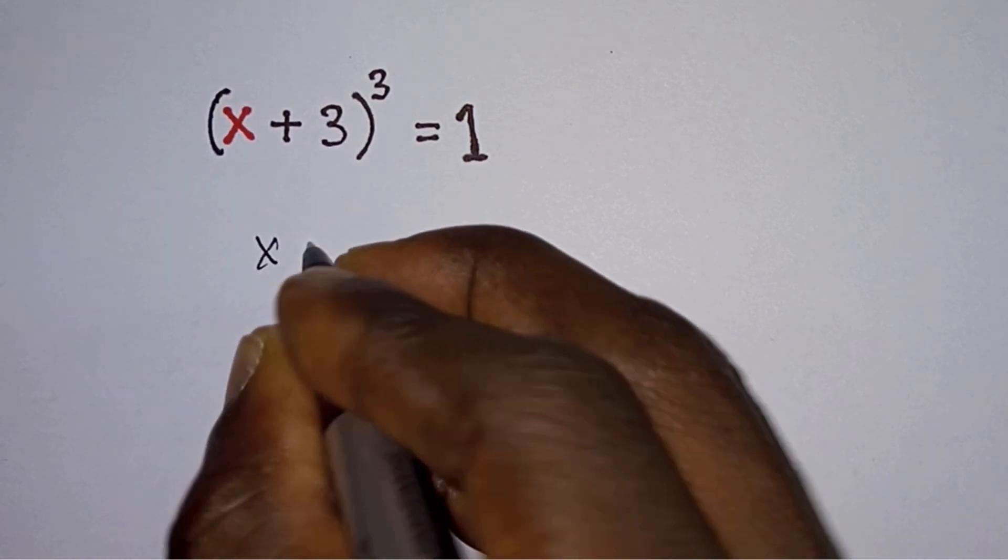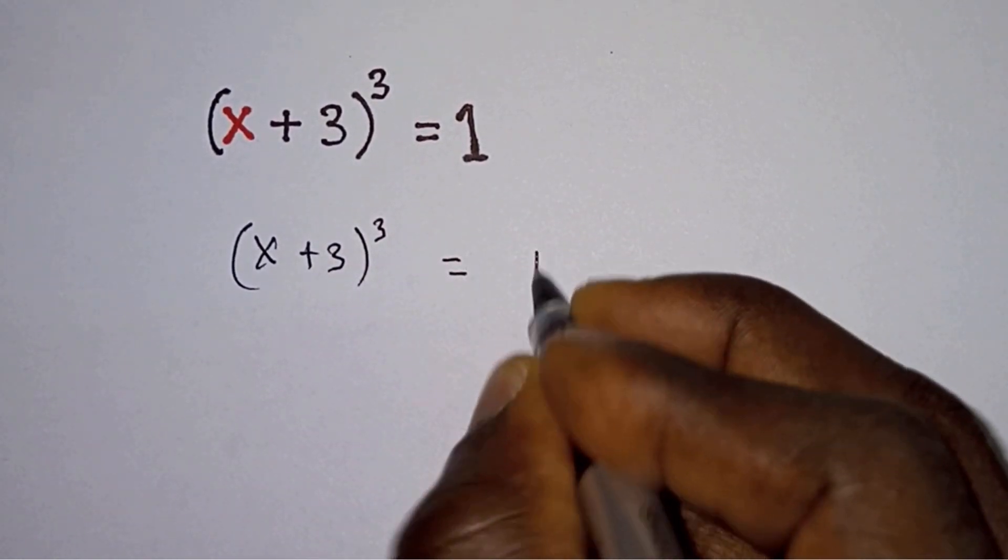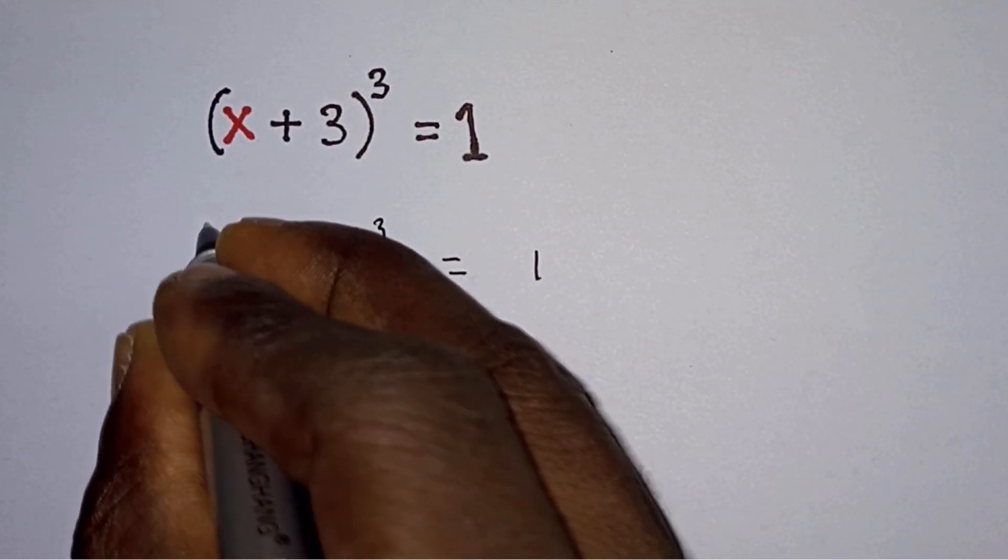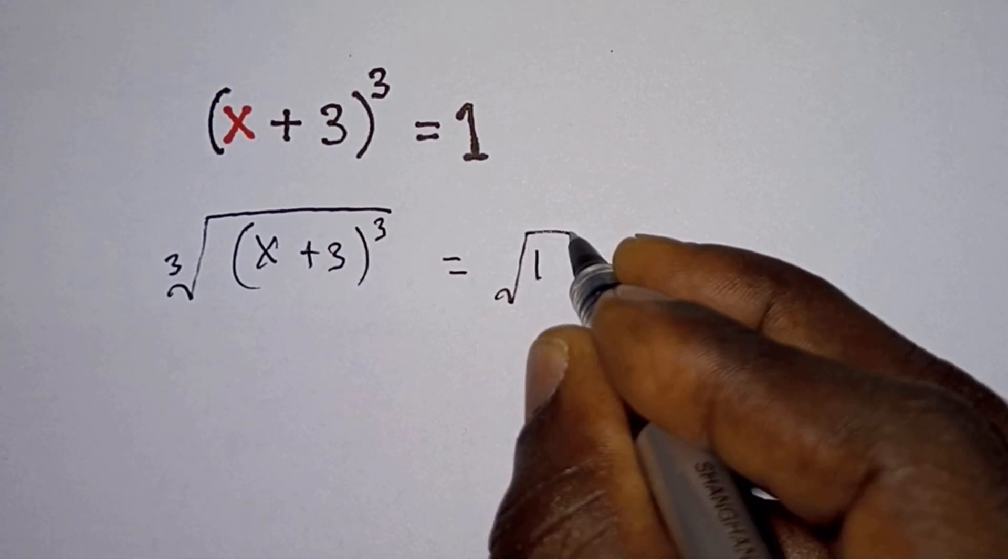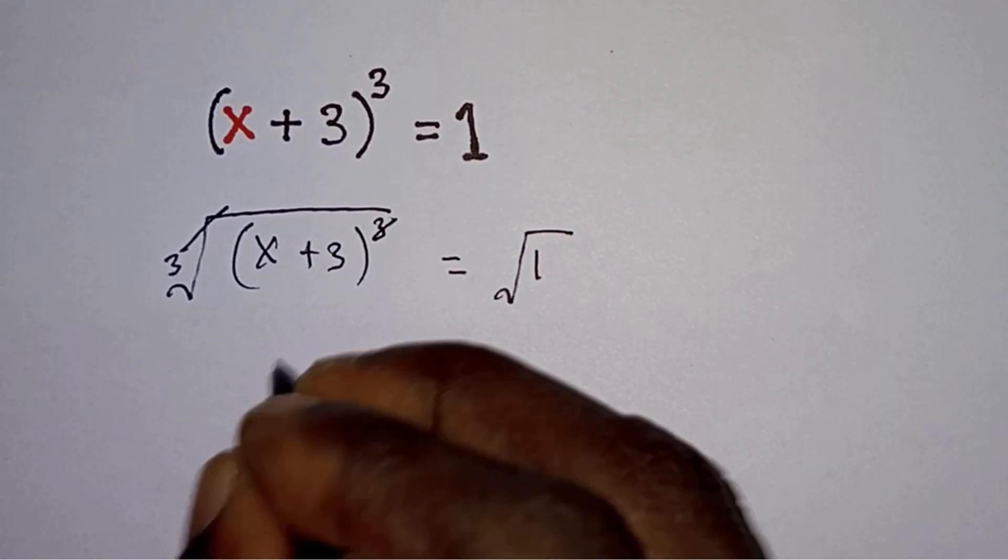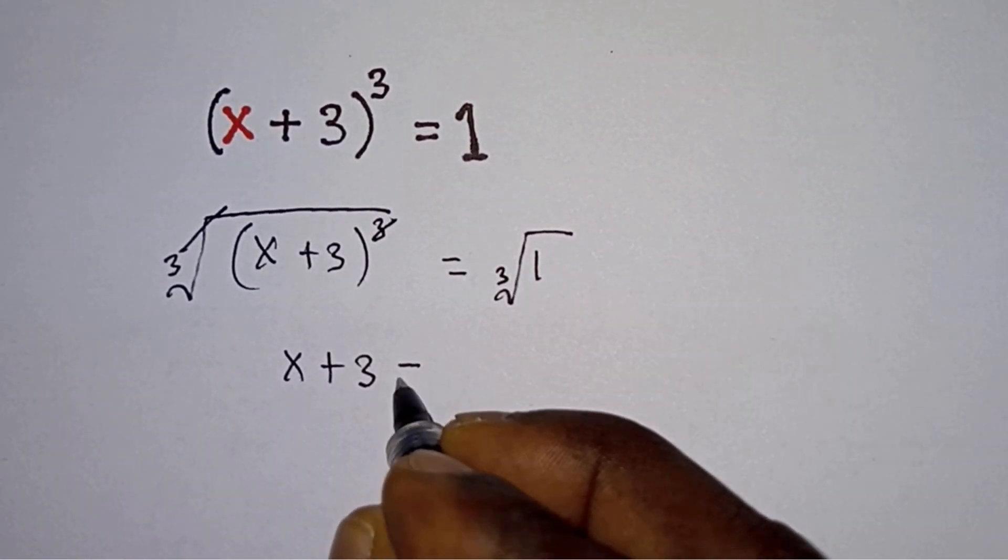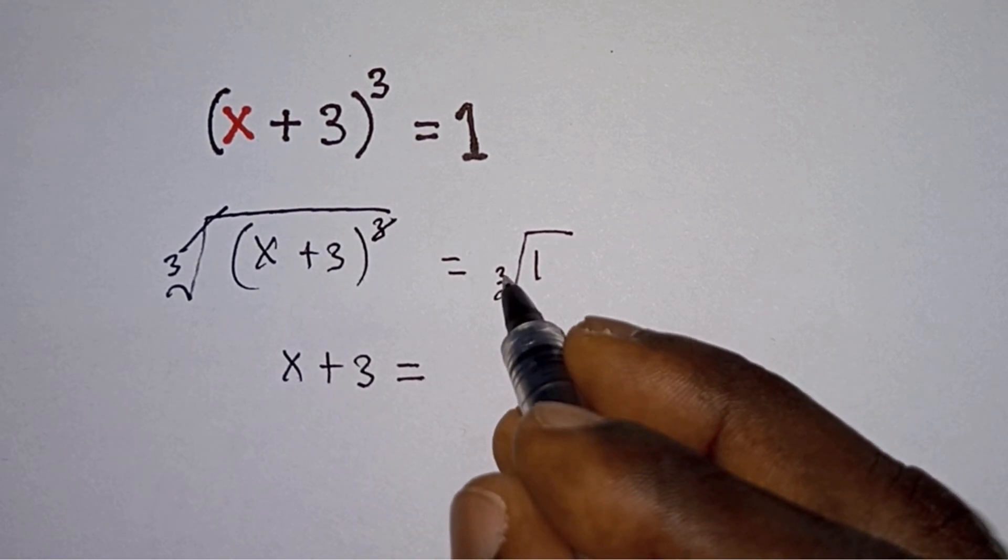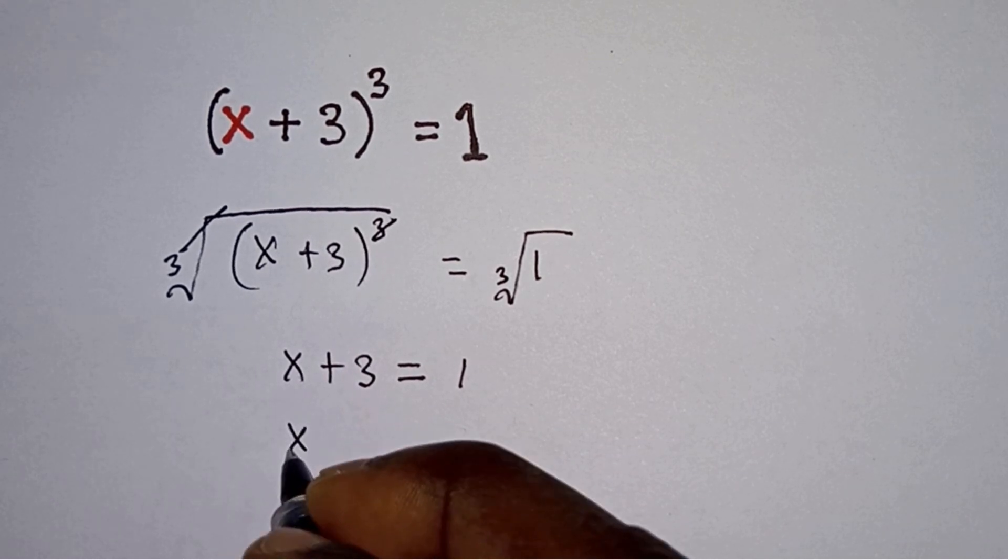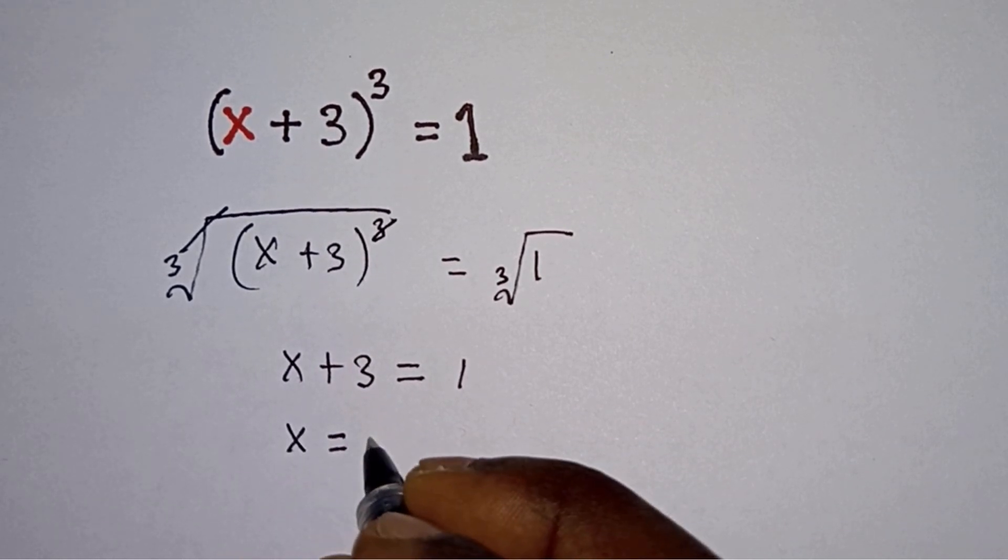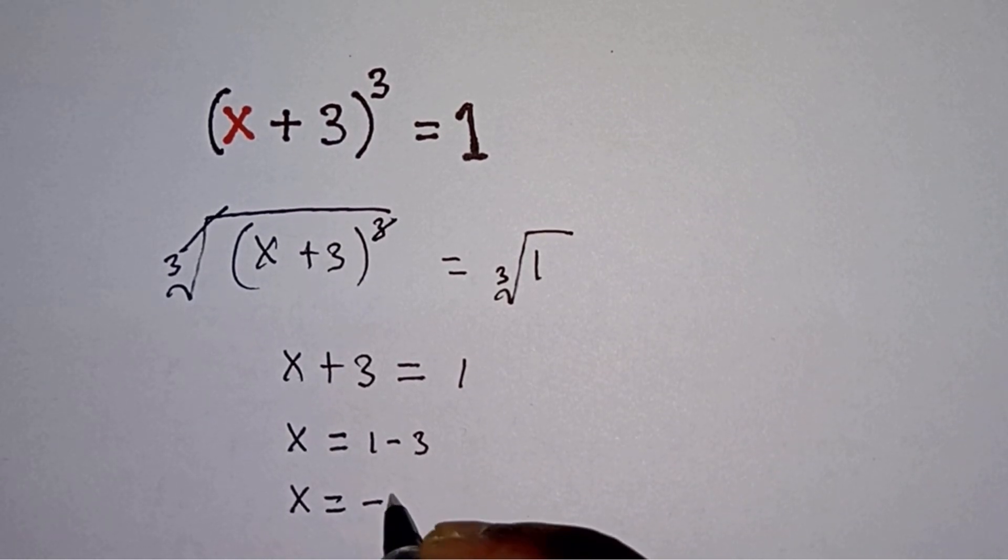A lot of people will tackle this problem this way: x plus 3 to the third power equals 1. They will just take cube root on each side of the equation so that this will cancel. We have x plus 3 equals 1, because the cube root is odd number. Then they'll make x the subject, so we have x equals 1 minus 3, which is x equals negative 2.